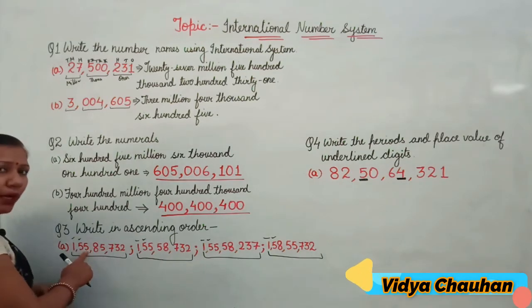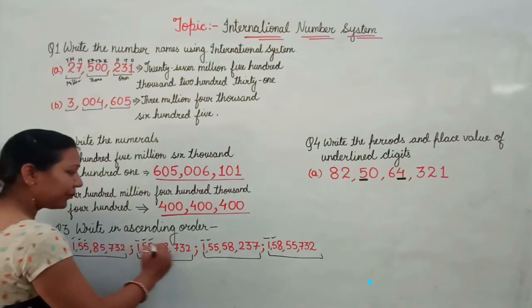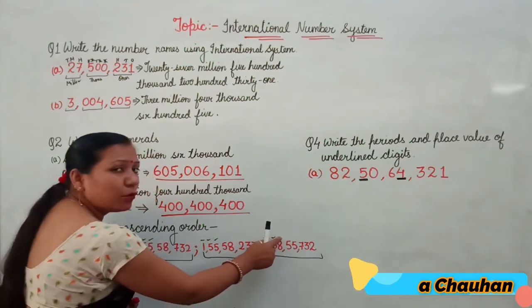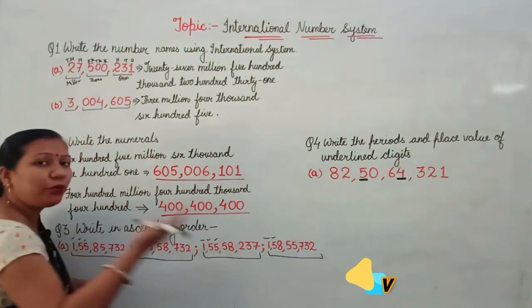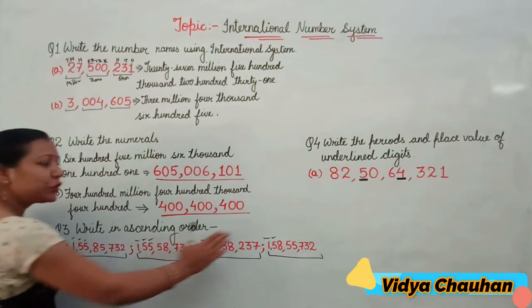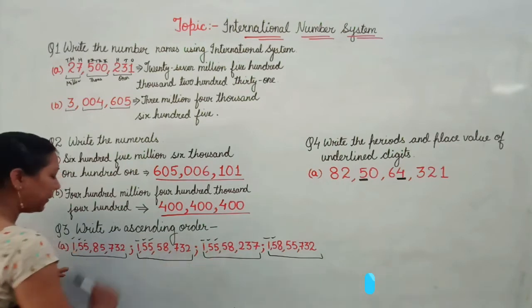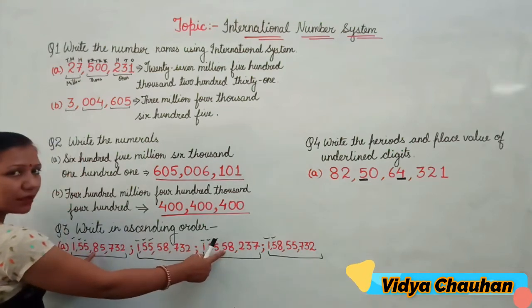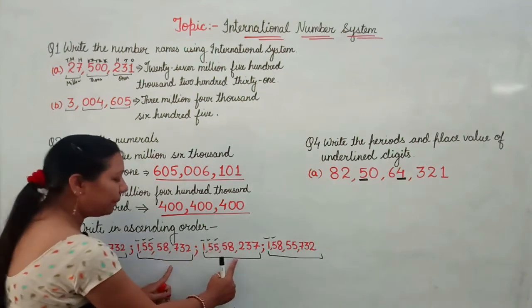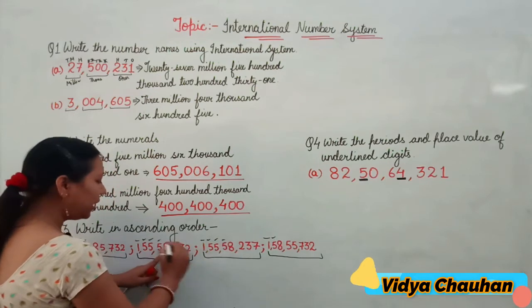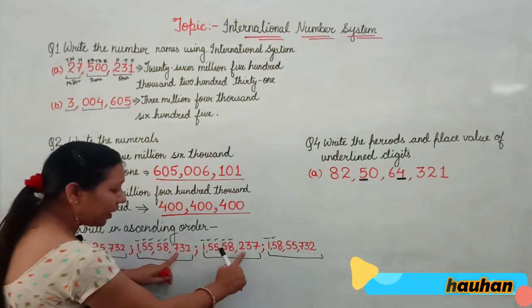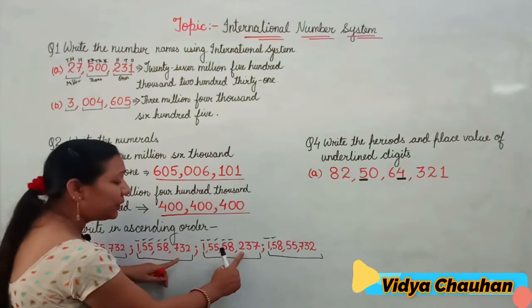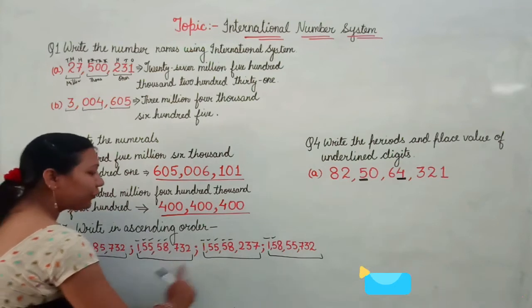Now comparing the remaining three numbers at the next digit: 8, 5, 5. Since 8 is bigger, we discard that number too. Now comparing the remaining two numbers — at the next digits they are equal (5 and 5, then 8 and 8). Moving to the hundreds place: one has 7, the other has 2. Since 2 is smaller, that number is the smallest among all four.